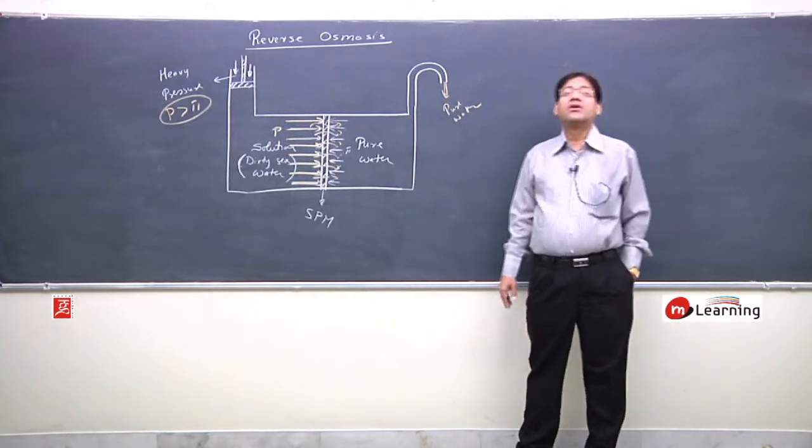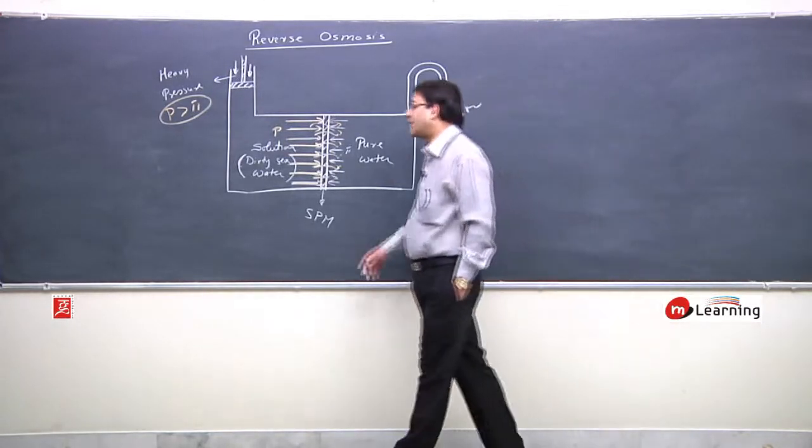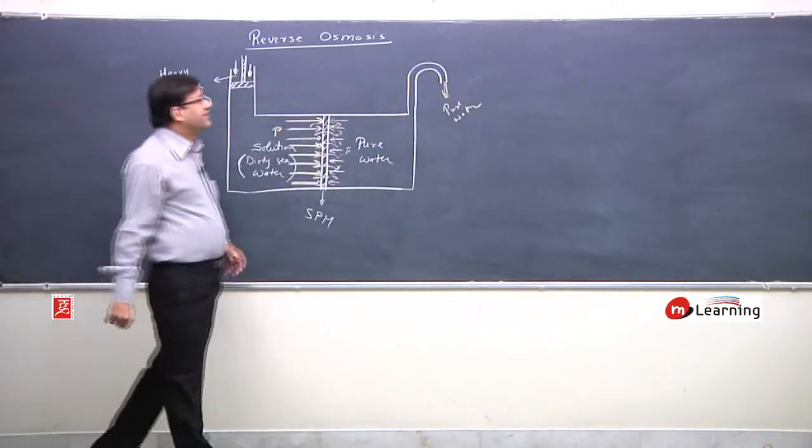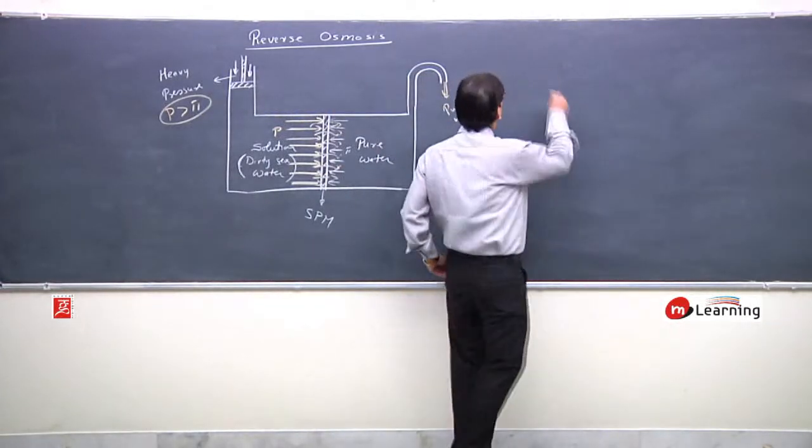These are the four colligative properties. Now on these four colligative properties, we'll do some numerical problems. Here I will introduce one more concept.